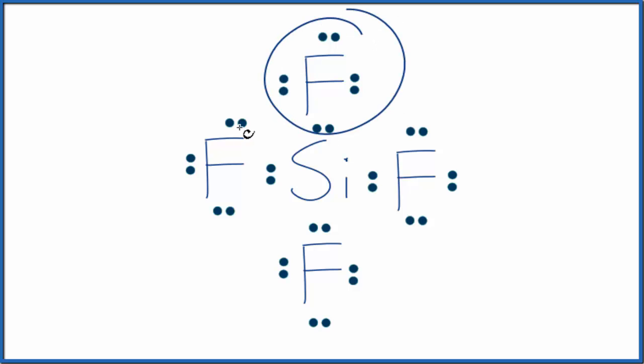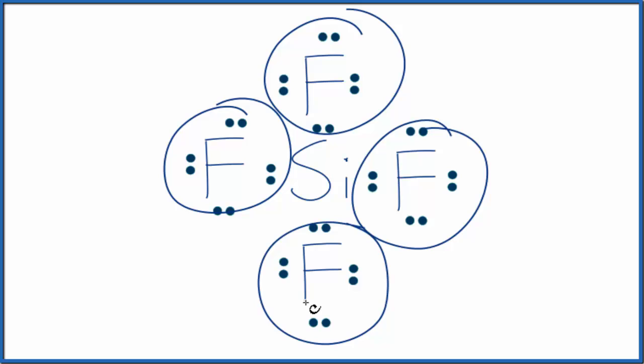If you look at these four fluorine atoms, you can imagine that they're going to push away from each other to be as far as they can and spread out. That'll give us the molecular geometry for SiF4.